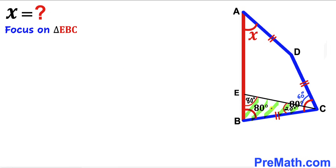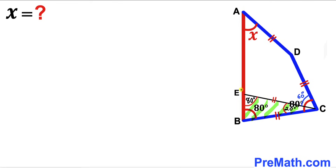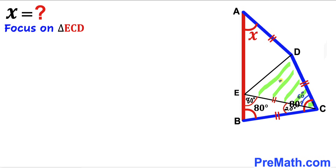Focusing again on triangle EBC, we can see it is an isosceles triangle since angle EBC is 80 degrees and angle BEC is 80 degrees. Therefore side BC equals side EC. In the next step, I connect points E and D to get side ED. Now focusing on triangle ECD, it is also an isosceles triangle since side EC equals side CD.